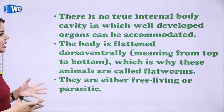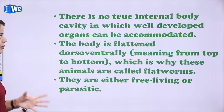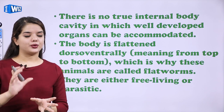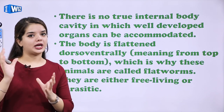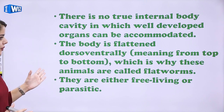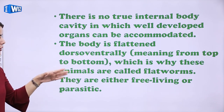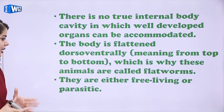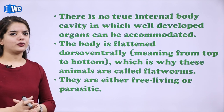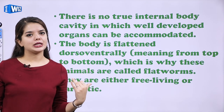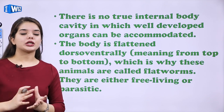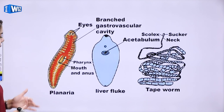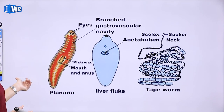There is no true internal body cavity in which well-defined organs can be accommodated. The body is flattened dorso-ventrally, meaning from top to bottom, which is why these animals are called flatworms. They are either free-living or parasitic — free-living toh freely live karte hai, parasitic toh kisi host pe depend hoti hai. Examples are Planaria, liver fluke, and tapeworm.